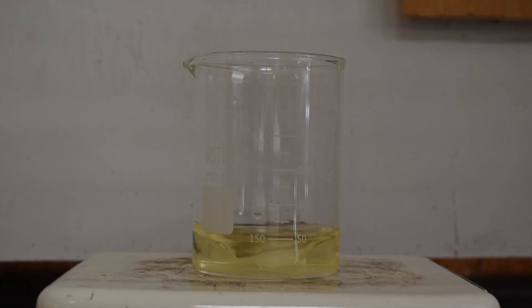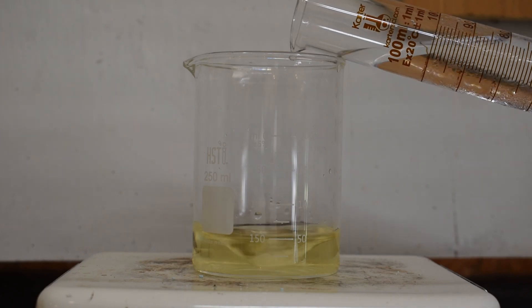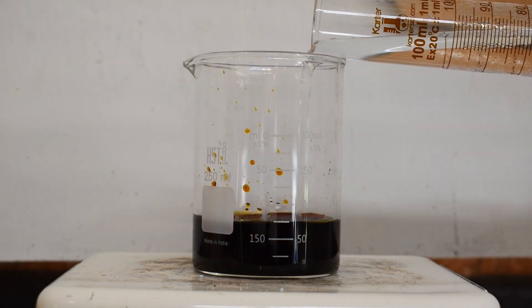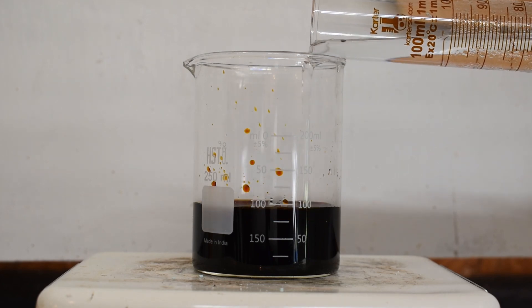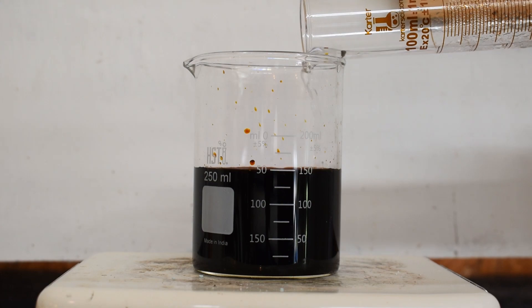Next I added 100 milliliters of 3% hydrogen peroxide. This is a pretty big excess because I want to make sure that all of the iodide is out of solution. Elemental iodine is soluble in solutions of iodide, so this will make it a lot easier to separate out the elemental iodine.